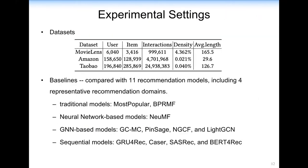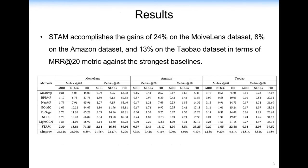After that, we evaluate STM with three datasets and 11 recommendation models, including four representative recommendation domains: traditional models, neural network-based models, GNN-based models, and sequential models. From this table, we can see that STM achieves better performance. Compared with the best baseline, LightGCN, we achieve an average relative increase of 24% on the MovieLens dataset, 8% on Amazon, and 13% on Yelp.